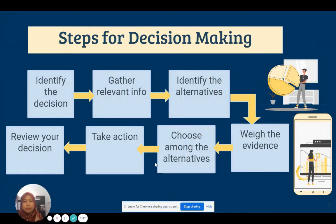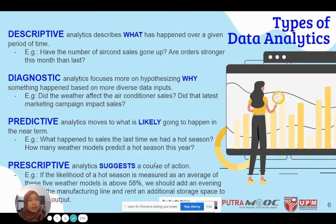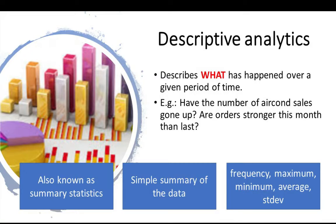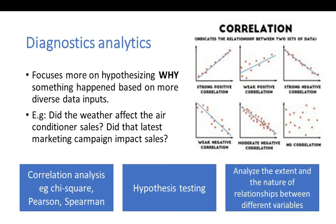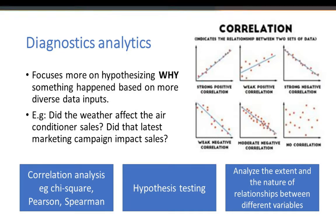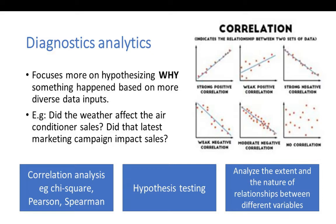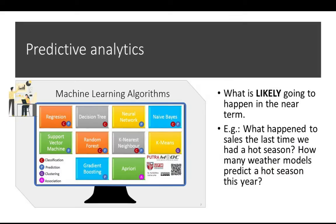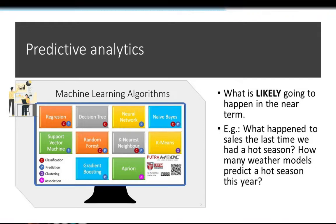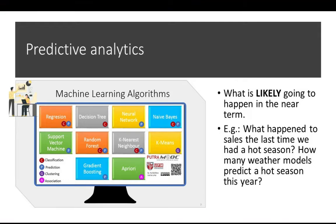There are four types of data analytics. Descriptive analytics focuses on what has happened over a given period of time. Diagnostic analytics focuses on identifying correlations — whether there is a relationship between one action and another behavior in the data. Predictive analytics identifies what is likely to happen, the probability, and even a score for something occurring.